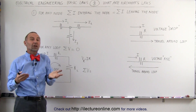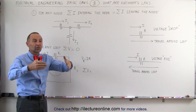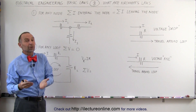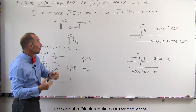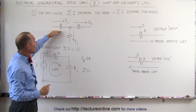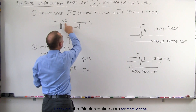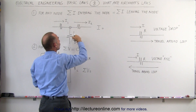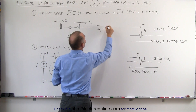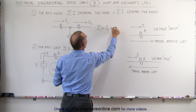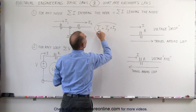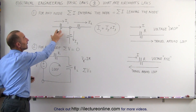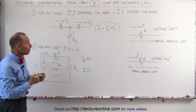Just like you can stand on any intersection, watch the number of cars entering the intersection and watch the number of cars leaving the intersection — the number of cars entering must always equal the number of cars leaving, unless they somehow disappear. Same with charges, and therefore same with currents. In this case, we can say that the current entering the node, which is I1, must equal the sum of the two currents leaving the node. Therefore, I1 equals I2 plus I3, and this equation stems from the fact that Kirchhoff said all the currents entering the node equals all the currents leaving the node.